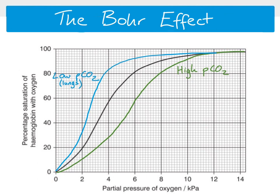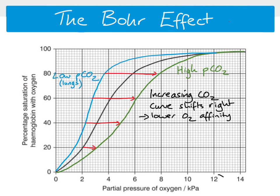This whole process is called the Bohr effect: as we move from lower to higher partial pressure of carbon dioxide, the oxygen dissociation curve shifts to the right. The more CO₂ present, the further right the curve shifts, meaning hemoglobin has lower oxygen affinity and more oxygen is released. This increases the body's ability to release oxygen in the respiring tissues, making it available for aerobic respiration.